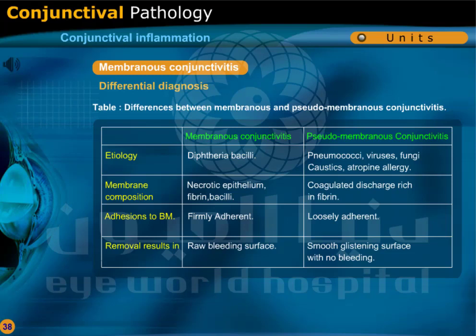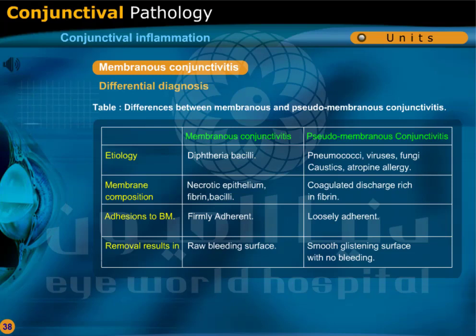In pseudomembranous conjunctivitis, the cause may be pneumococcal organisms, viruses, fungi, caustics, or atropine allergy. The membrane is composed of coagulated discharge rich in fibrin. It is loosely adherent to the basement membrane, and its removal results in a smooth, glistening surface with no bleeding.